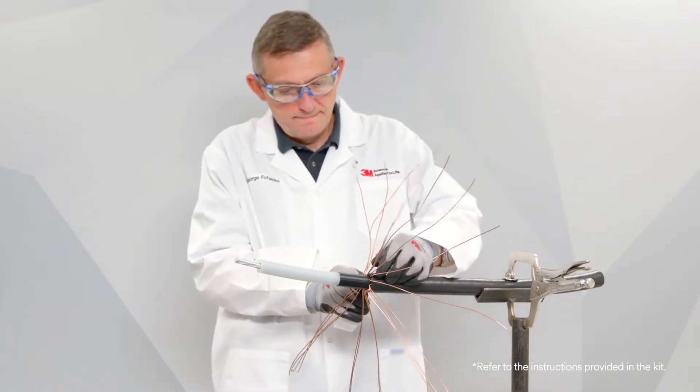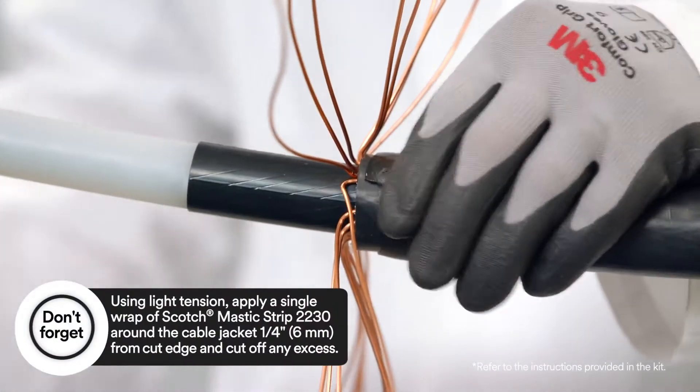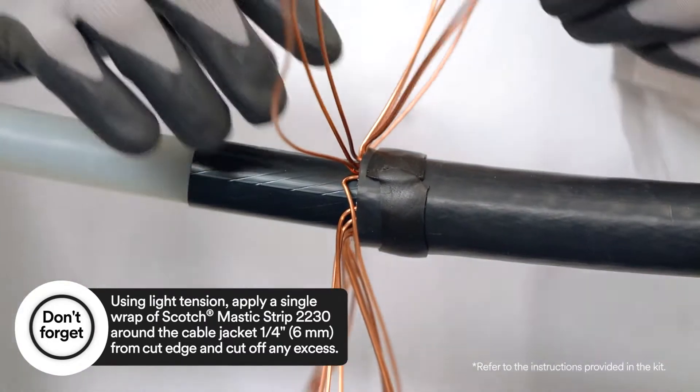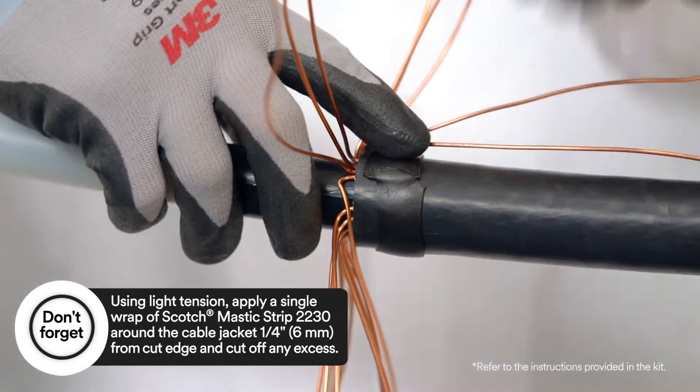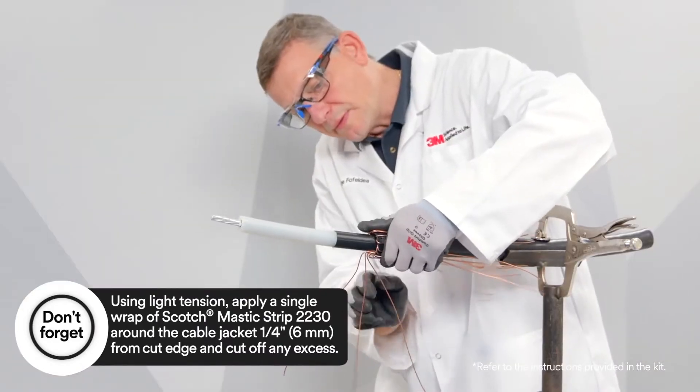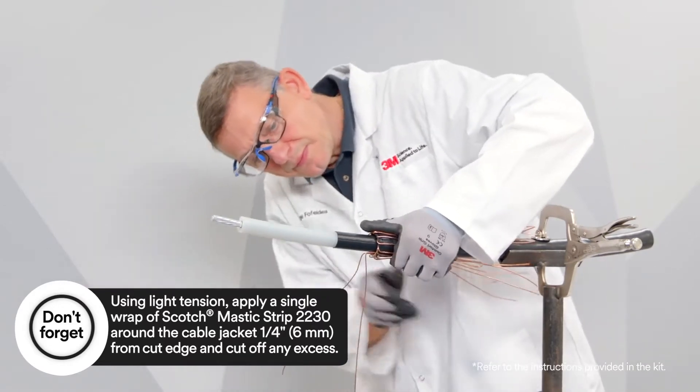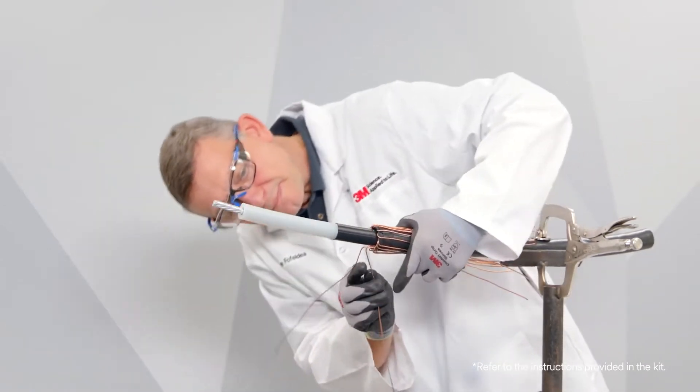After you've applied Scotch Mastic Strip 2230, bend the neutral wires back over the applied sealing mastic. Make sure all concentric neutral wires that are bent back are equally spaced and do not cross each other.